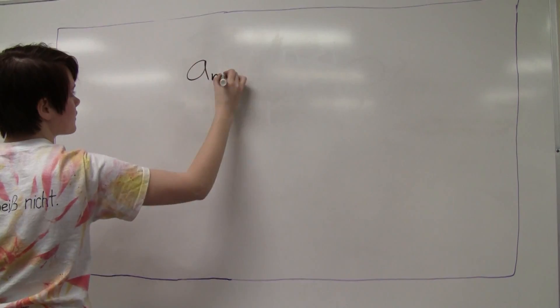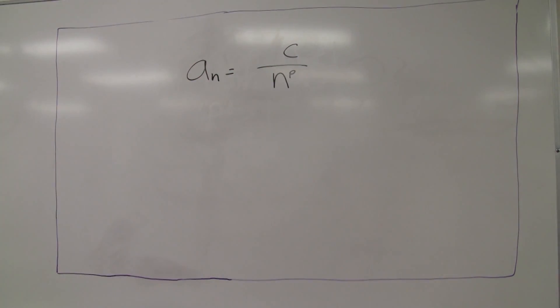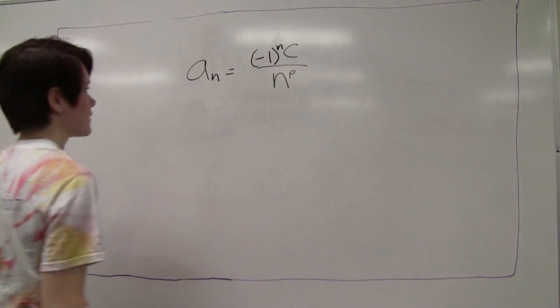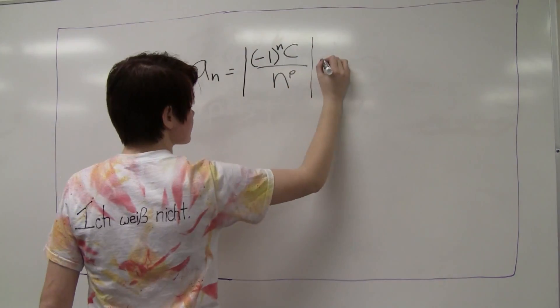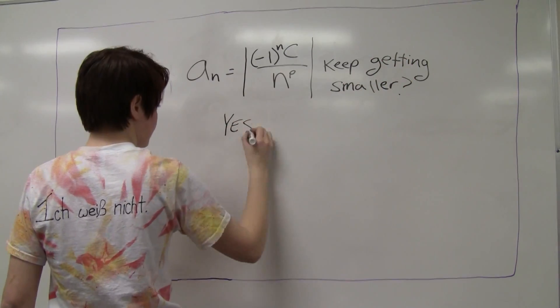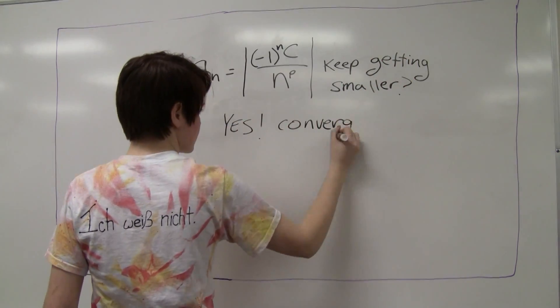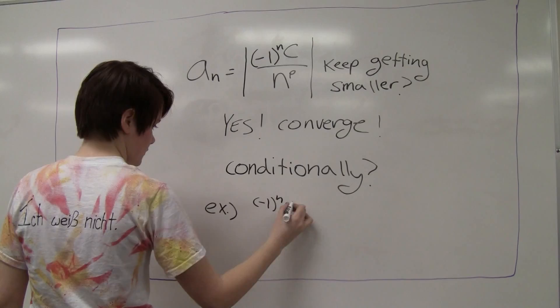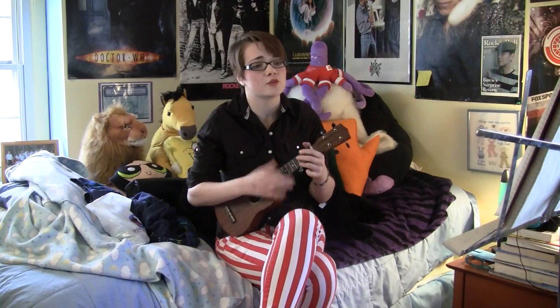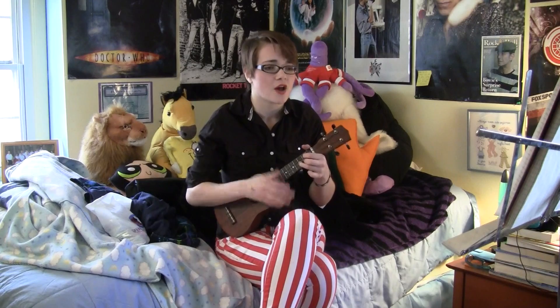Does your function look like c over n to the p? Does it alternate and change signs every other time you see? Do the values get smaller the more and more you see? If yes, you converge, but perhaps conditionally. Gonna test some series, it'll make you weary. Test for divergence with a sense of urgency.